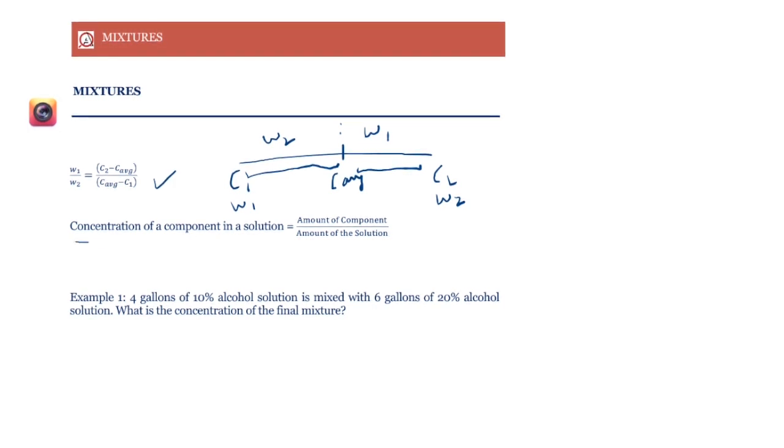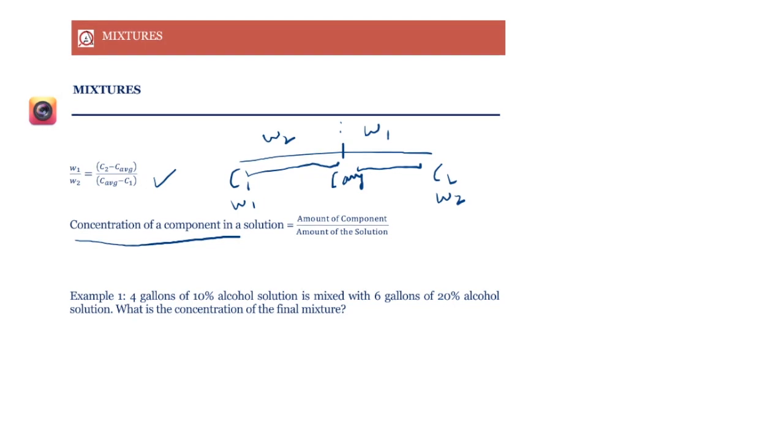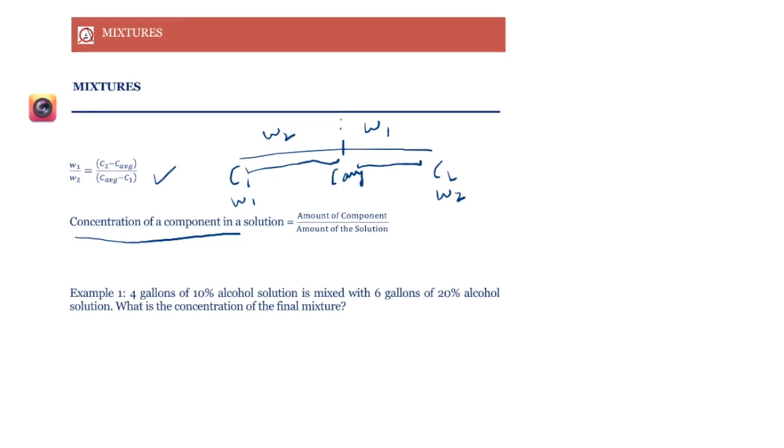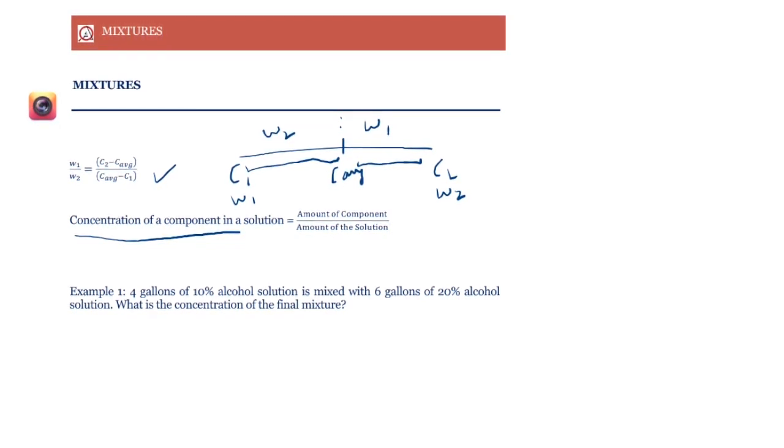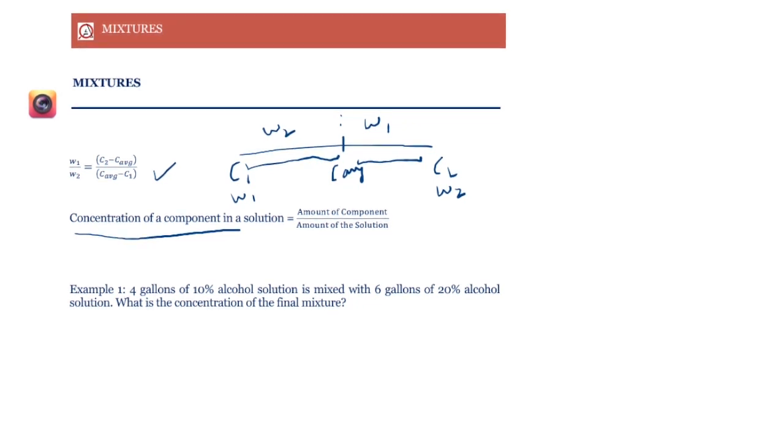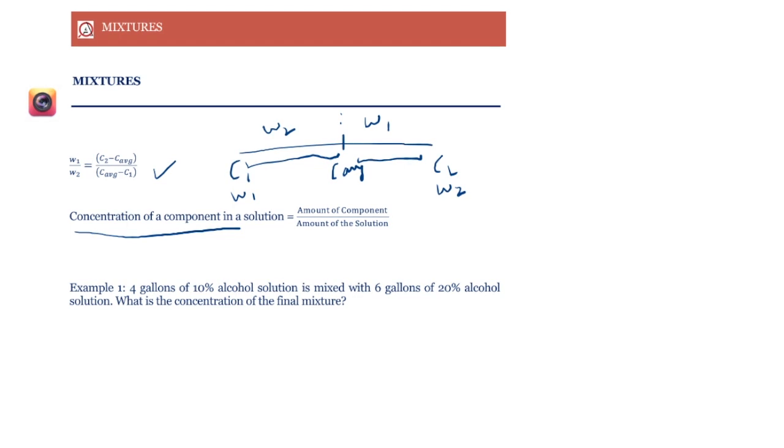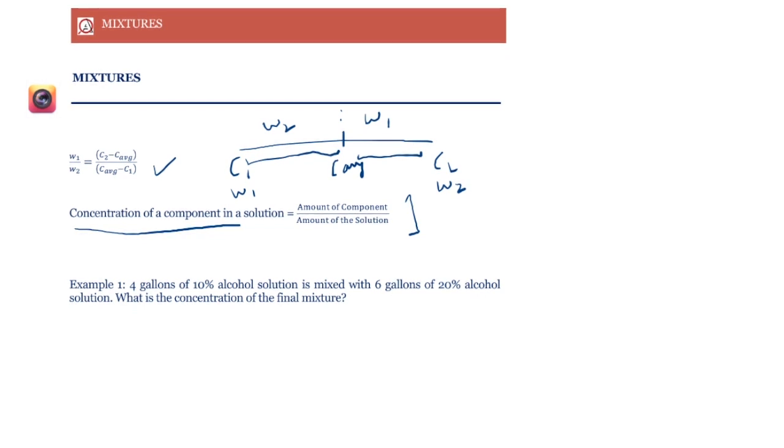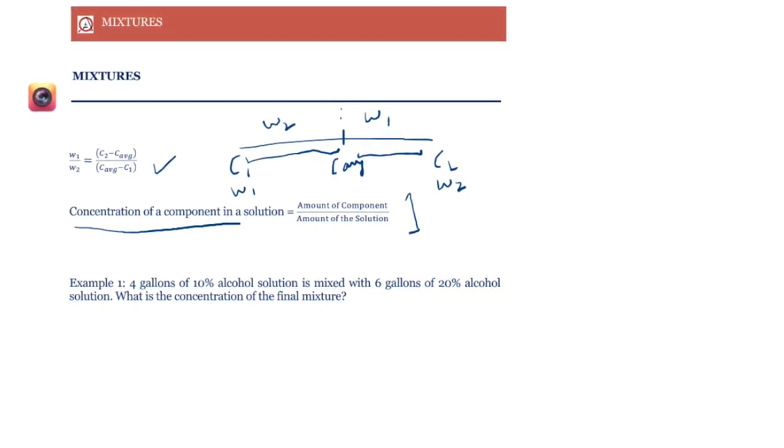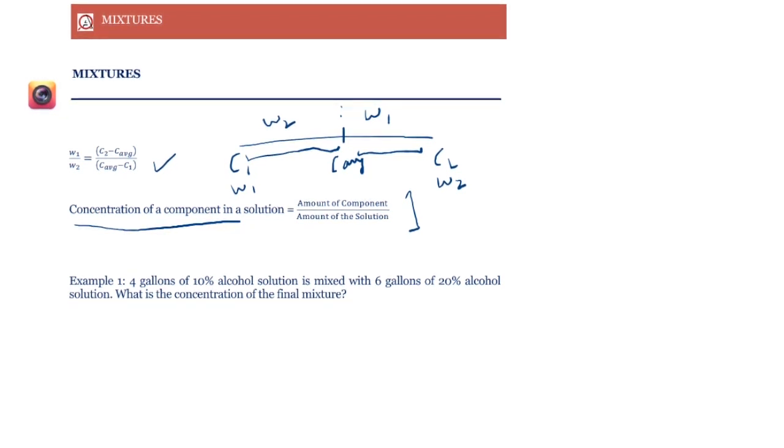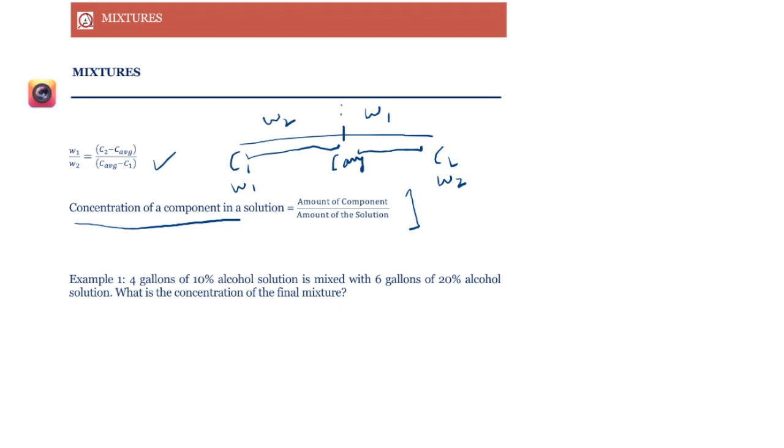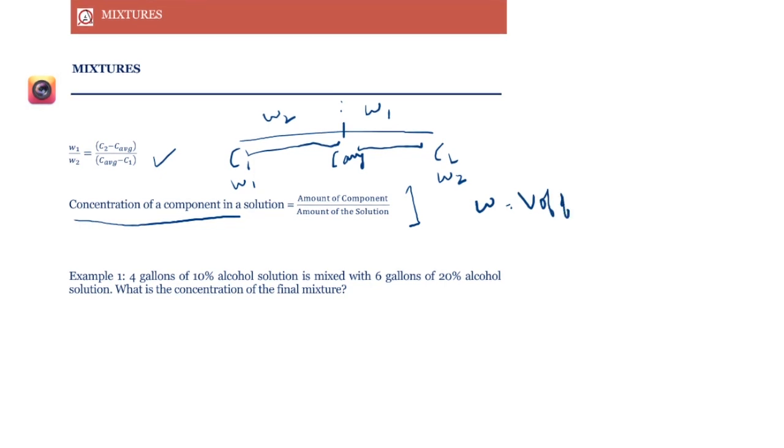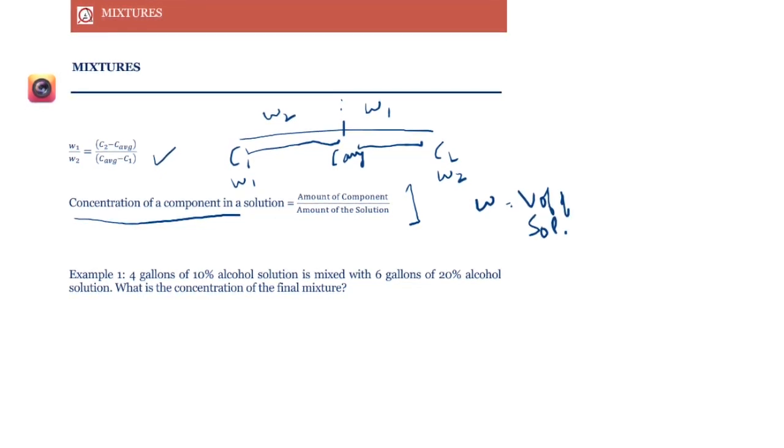What are we asked to average? Often the concentration of a component in a solution. So for example we'll be given that we have a solution with let's say 10% alcohol and another solution with 20% alcohol and then we mix them together. So what is the concentration of the solution of the mixture that we get? Now how do we calculate concentration of a component? That is amount of component upon amount of the total solution. Here amount of the solution basically means the volume of the solution because we're talking about liquids. So what will be our weight? Our weight will be the solution, the volume of the solution. Now all these things will become clear once we take an example.